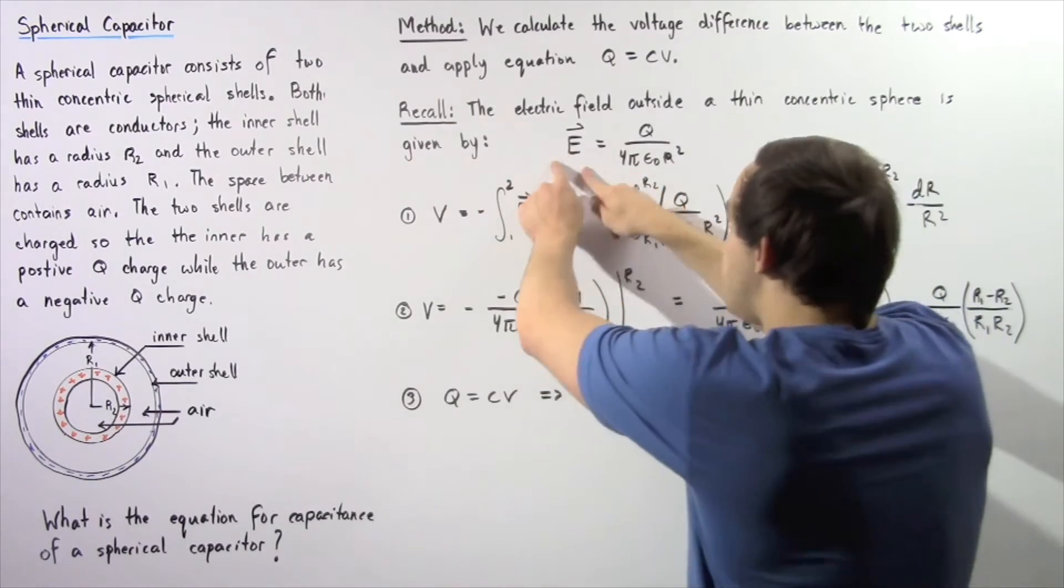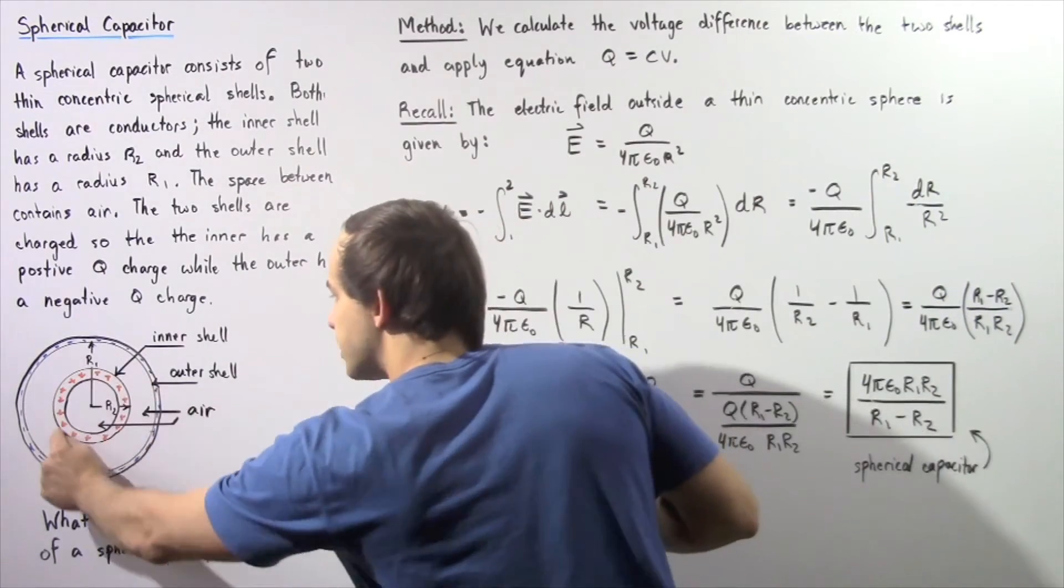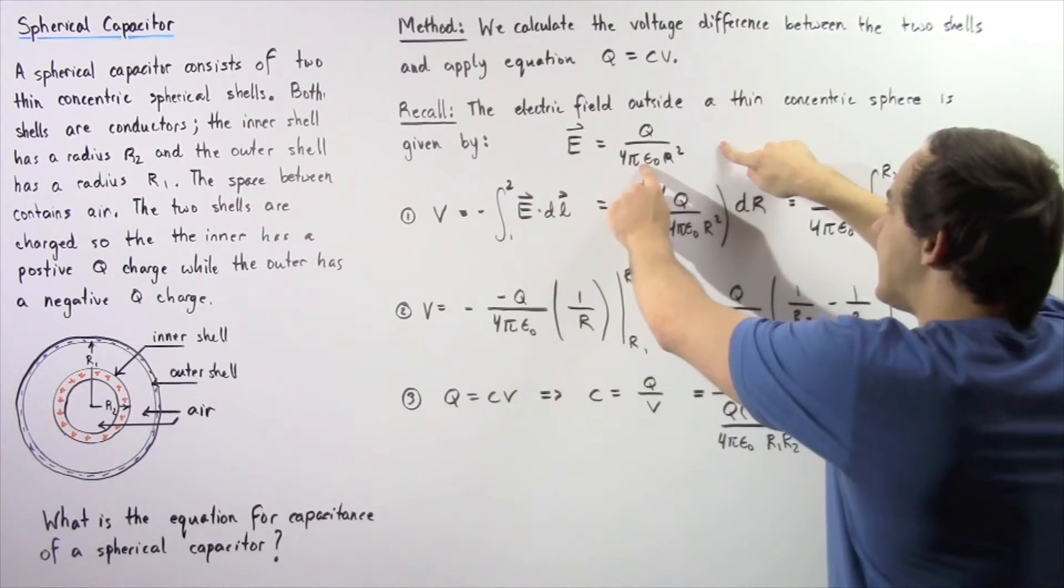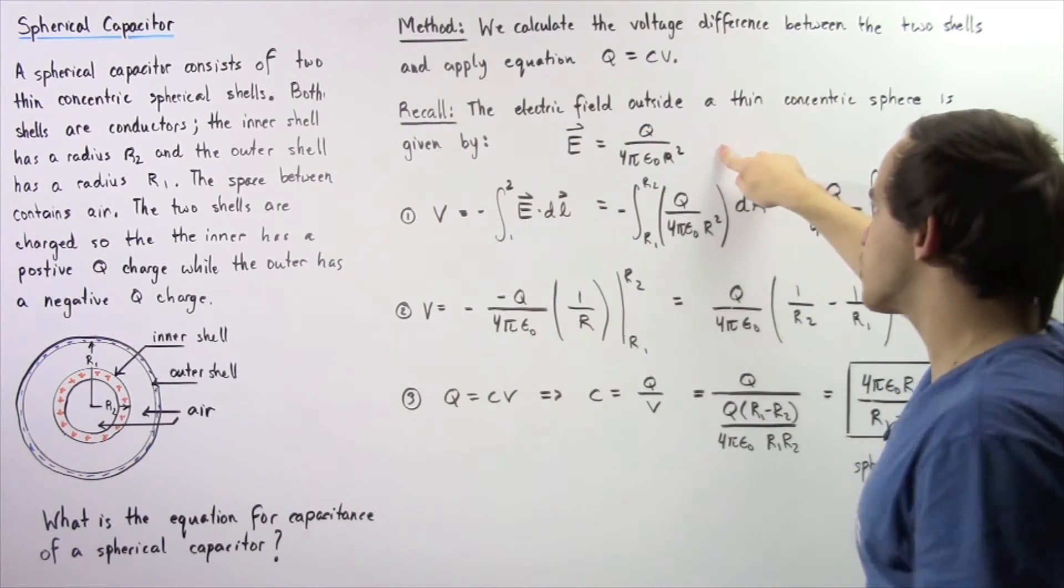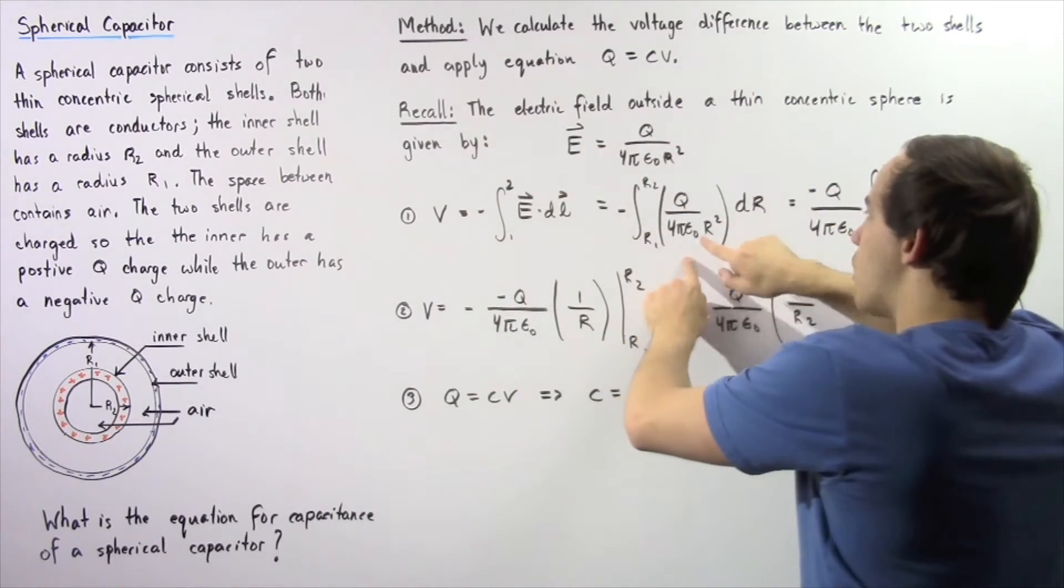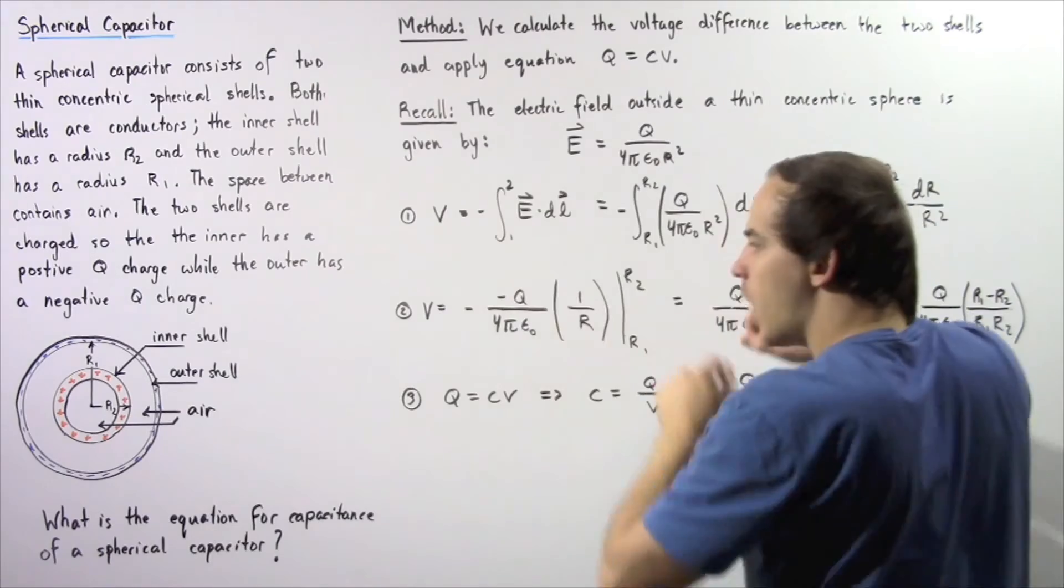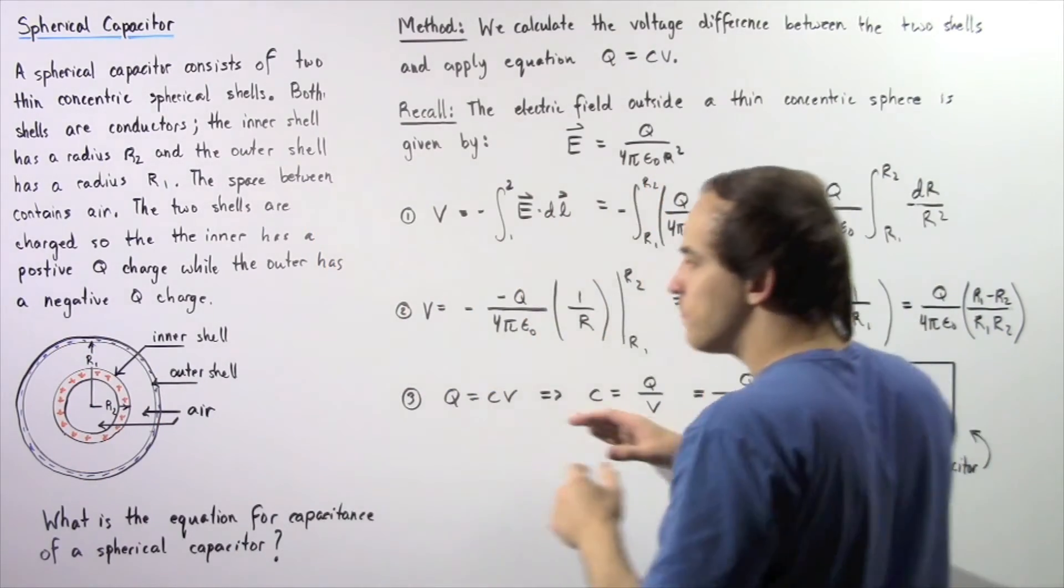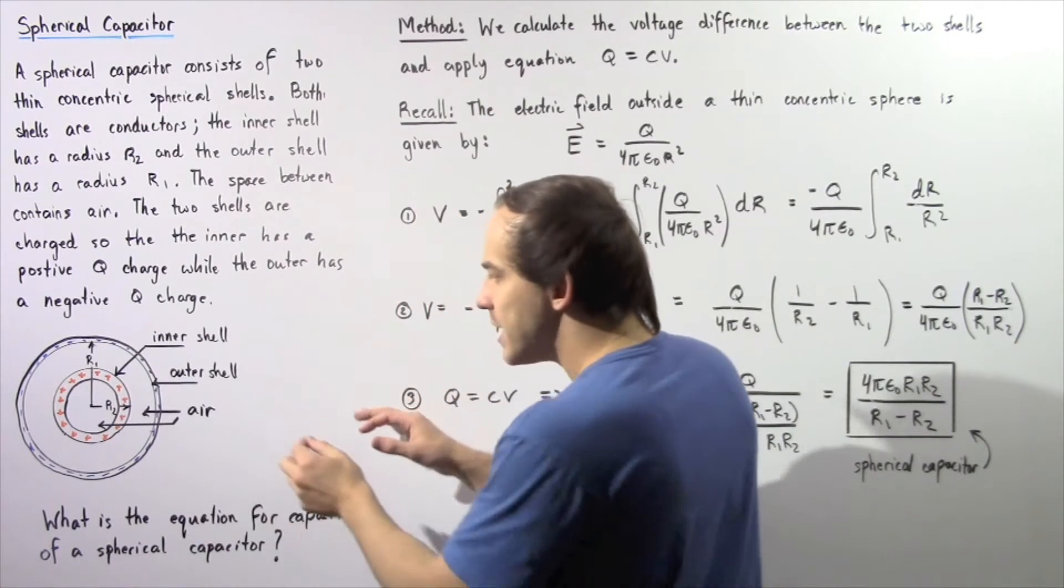Because the electric field in this region is equal to Q divided by 4π epsilon naught multiplied by r squared, we replace our electric field with this ratio. We replace point 1 with radius r1 and point 2 with radius r2.